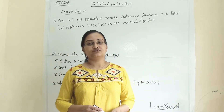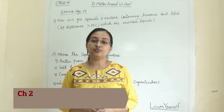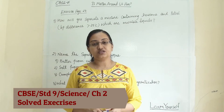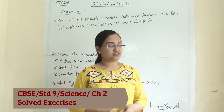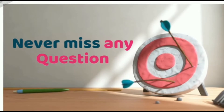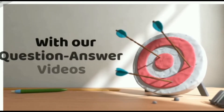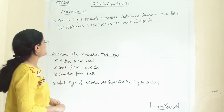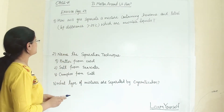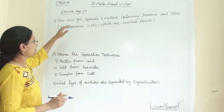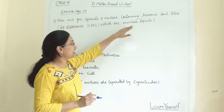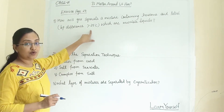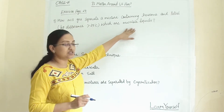Hello and welcome to Learn Yourself. Today we are going to solve some of the important questions from the chapter 'Is Matter Around Us Pure?' This chapter is from the CBSE standard 9 syllabus. These questions are from page number 24. The first question is: how will you separate a mixture containing kerosene and petrol, where the boiling point difference is more than 25 degrees Celsius and they are miscible liquids?